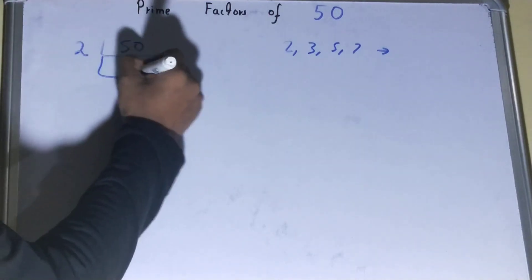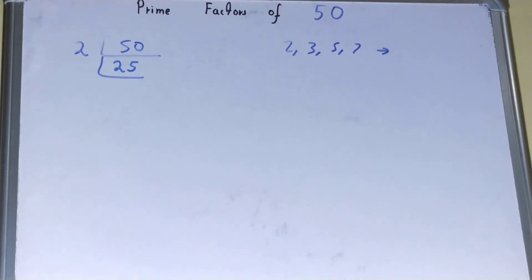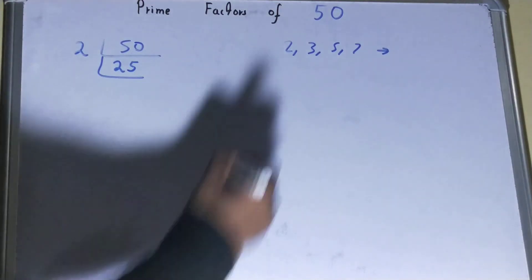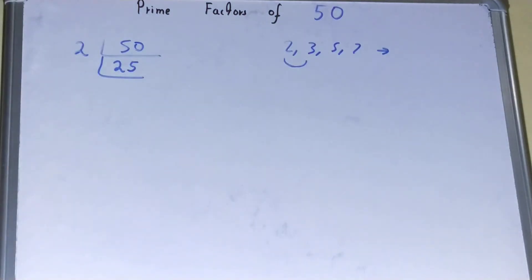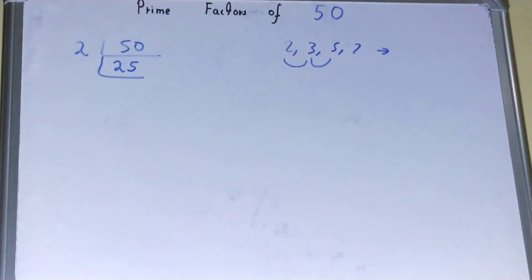Again repeat the same process. Is 25 divisible by 2? No. So we'll go to the next lowest prime number, that is 3. Is 25 divisible by 3? If we check it, it is not divisible. So you go to the next lowest prime number, that is 5. Is 25 divisible by 5? Yes, it is.